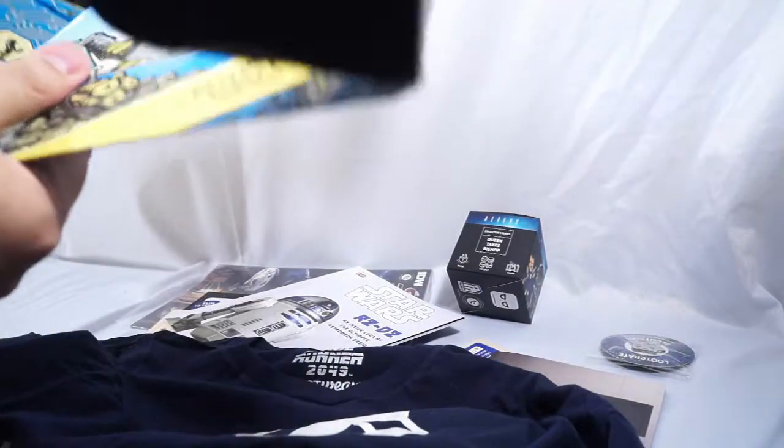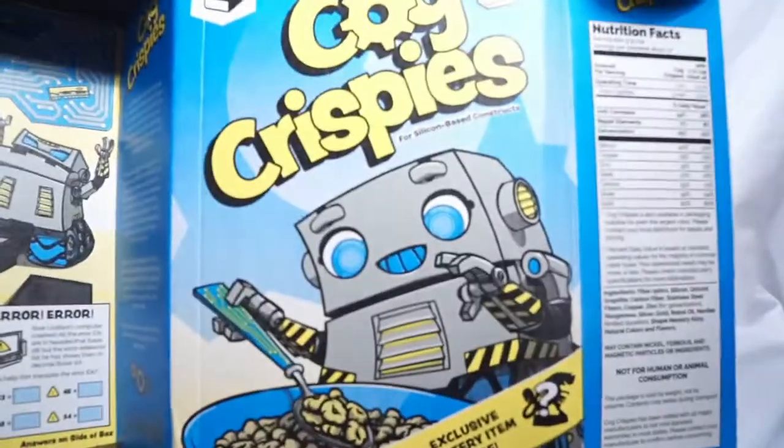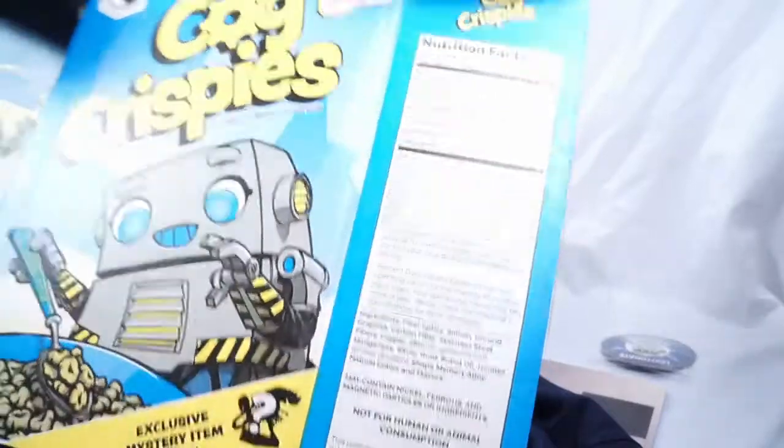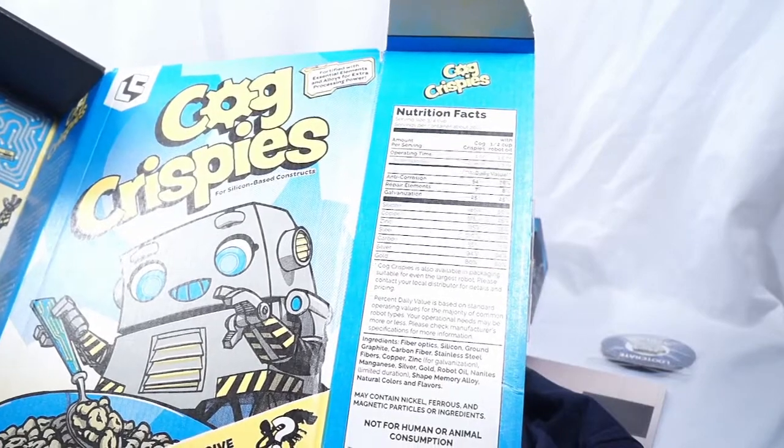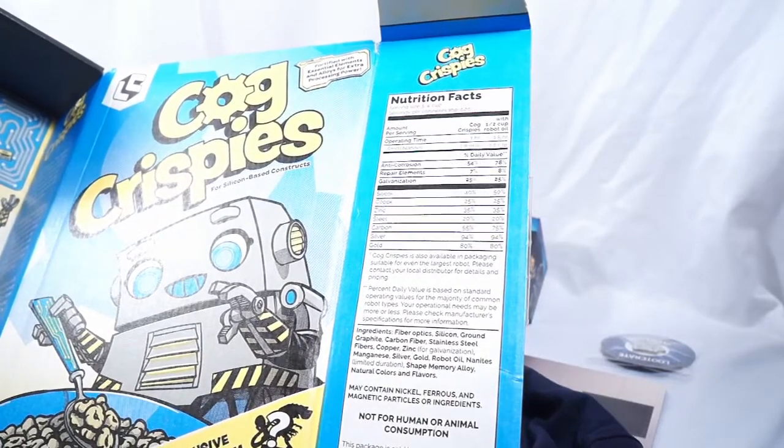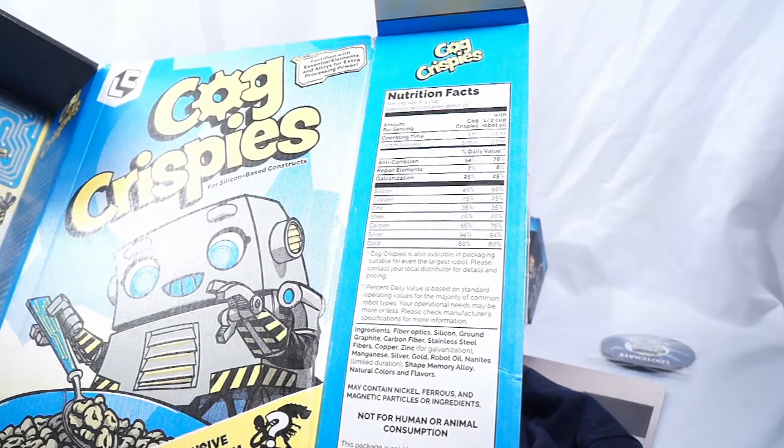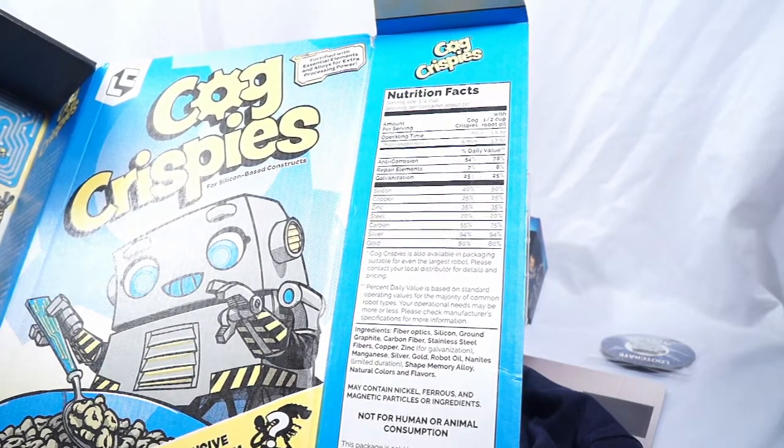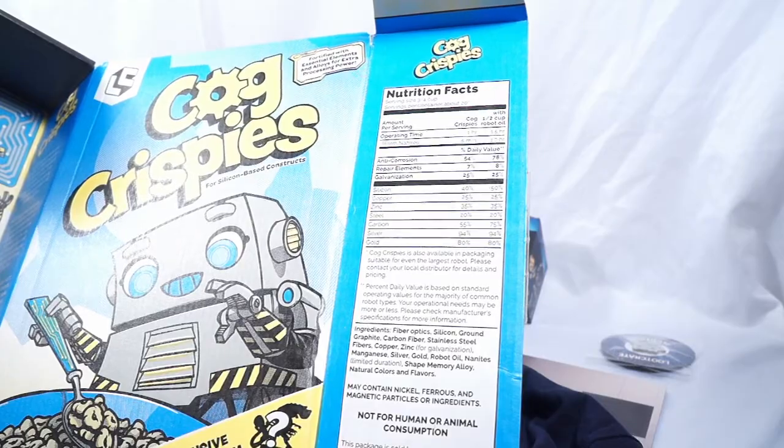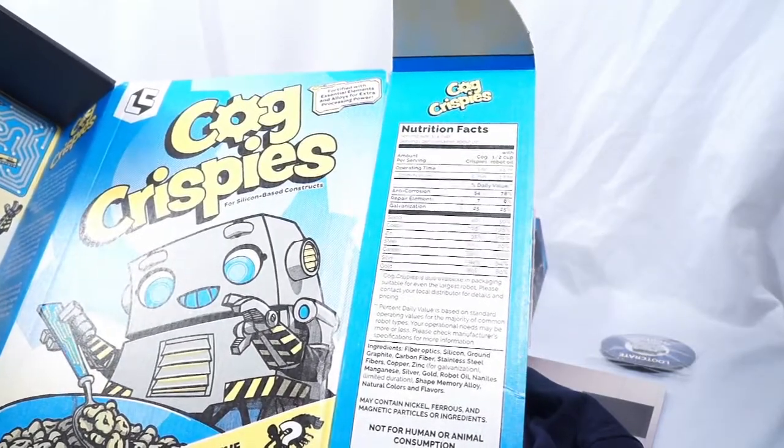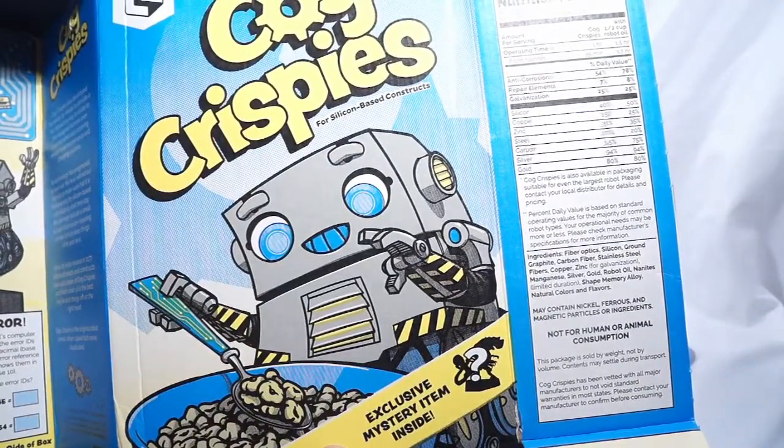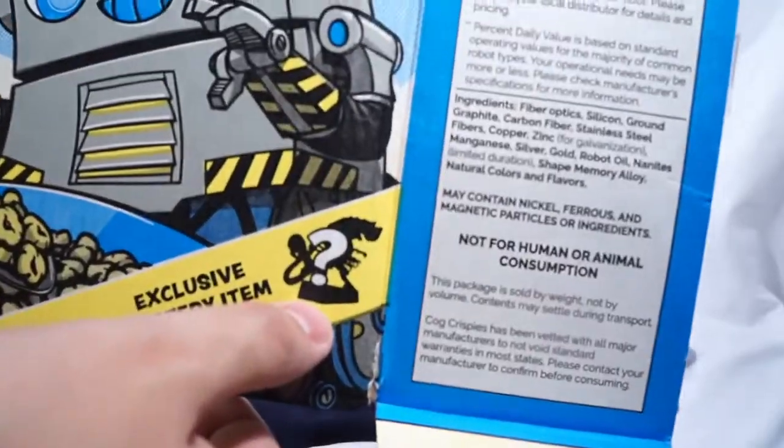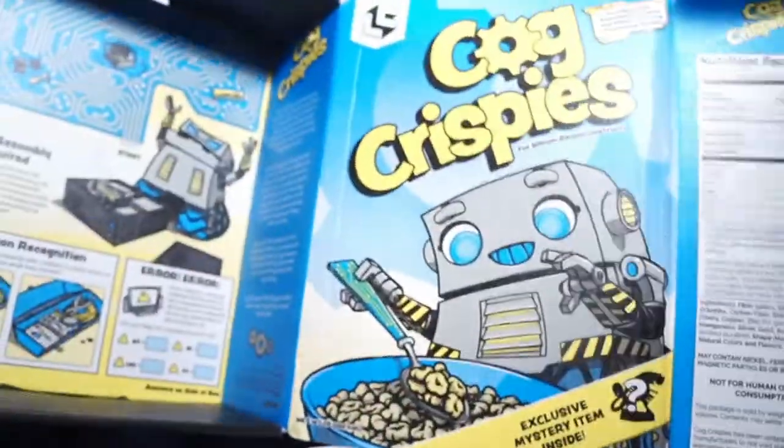And oh, but I was wrong. The box does become something. It becomes a box of cereal. And you actually just pretty much turn it inside out. There's the nutrition facts. It is made from nanites and fiber optics, silicon, ground graphite, carbon fiber, stainless steel fibers, copper, zinc for galvanization, manganese, silver, gold, robot oil, nanites, limited duration shape memory alloy, natural colors and flavors. Now we know what robots are made out of in case you ever wanted to consume one. That exclusive Mr. Adam inside is actually the Queen Alien. That's supposed to be the free gift in the box of cereal.